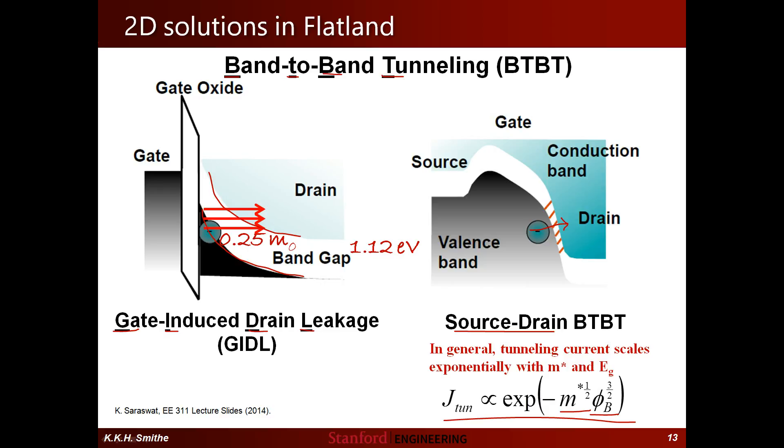Additionally, the large effective mass means that if you want to define your off-current at, say, 100 nanoamps per micron, you can have the off-state barrier lower for the same leakage, and then when you turn your gate on, the on-state barrier will also be lower, which actually allows for more current to flow.